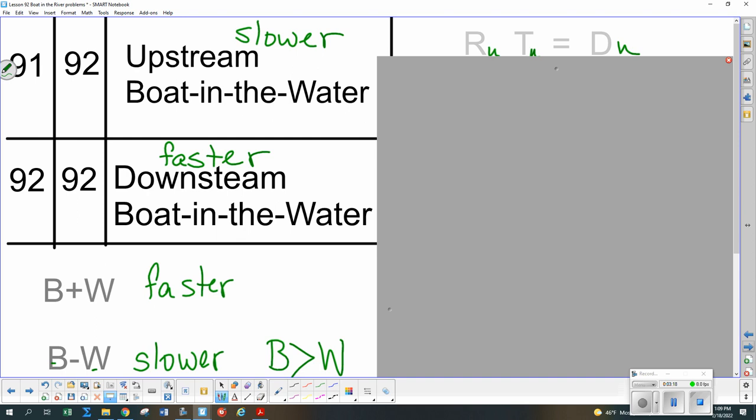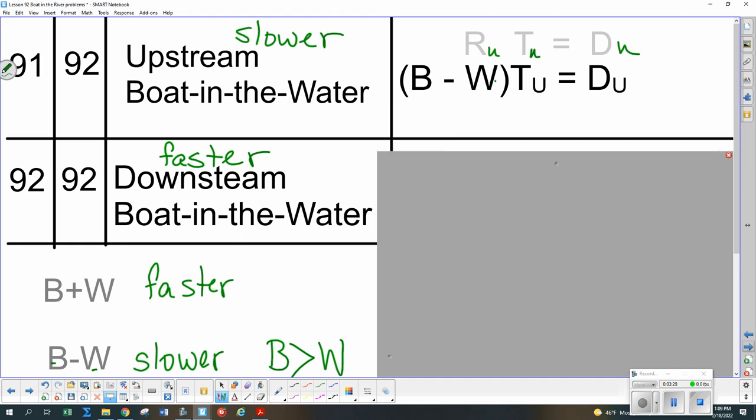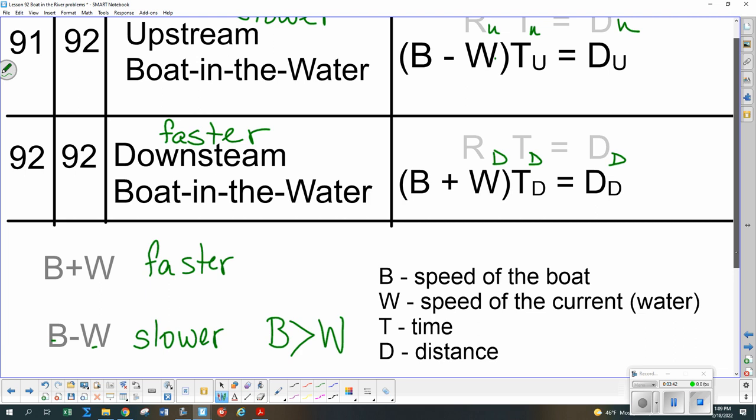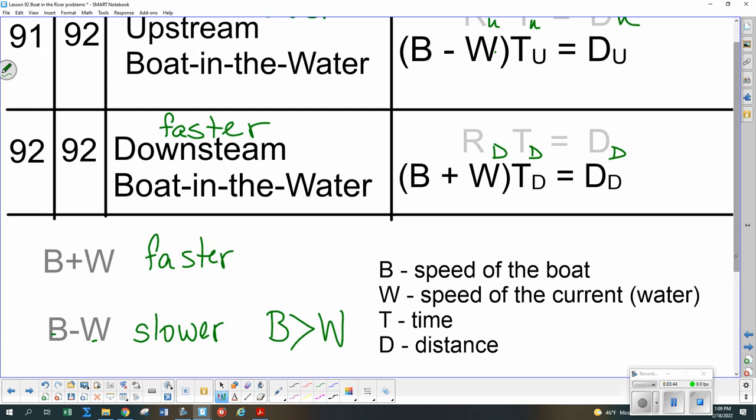So now what I'm going to do is I'm going to change that R to the rate for upstream, the slower one. B minus W is just R_U times T_U is D_U. And when I go downstream, so that's the one that's faster, rate times time equals distance for downstream. I just put in that faster rate, B plus W, times T_W, times T_D equals D_D.